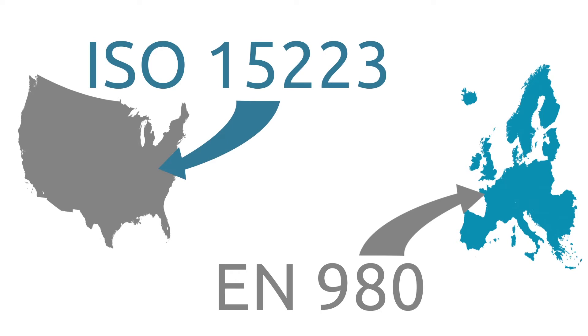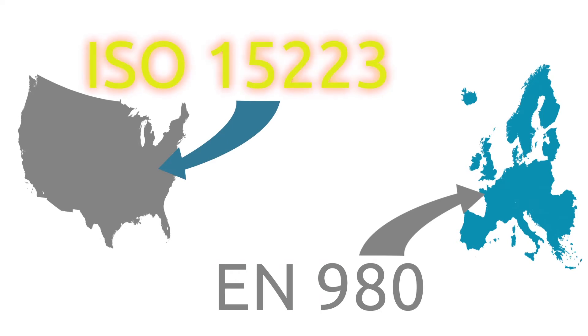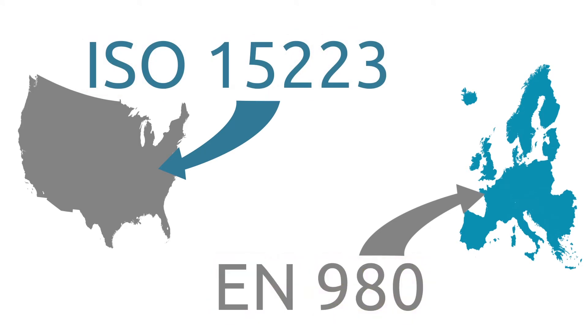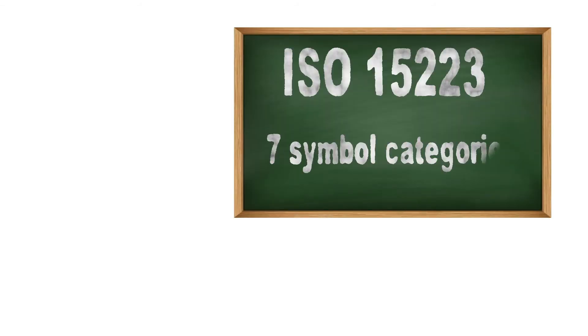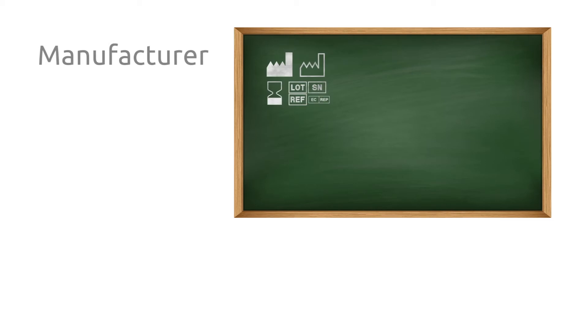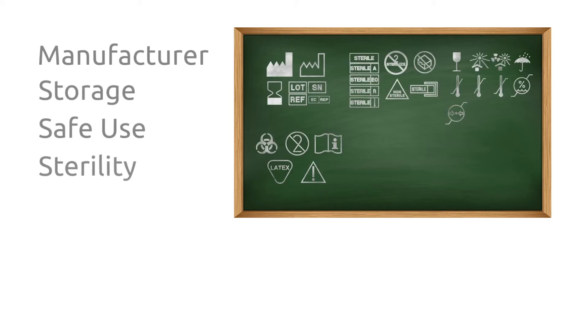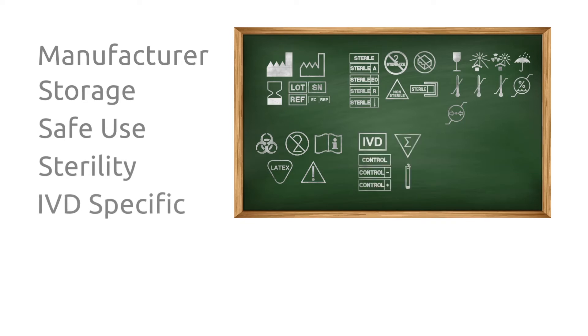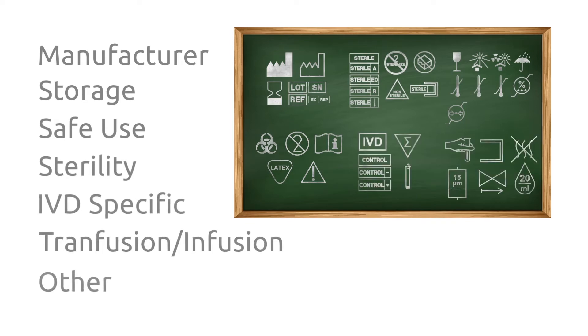This video covers the most common medical device and IVD labeling symbols under ISO 15223 and EN 980. We'll provide an explanation as well as an example for each of them. It's important to note that this video is not intended to describe what symbols are permissible in each region. According to ISO 15223, medical device symbols are divided into seven categories: Manufacturer, Storage, Safe Use, Sterility, IVD-specific, Transfusion-Infusion, and Other. Let's take a look at each of these.